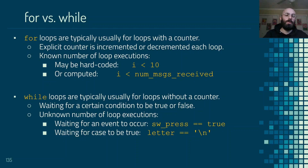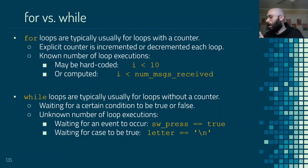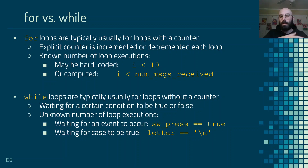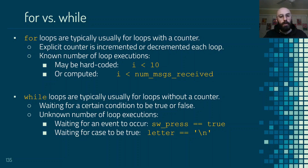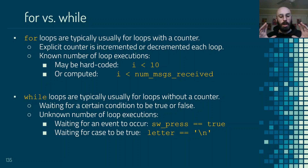For loops should typically be used when we have some known number of times that a loop should execute. We typically have some explicit counter — in many examples we just called it i, or for our servo example we called it angle to represent the different angles. We typically increment or decrement it and there's some expected number of times it should execute. Sometimes it could be hard-coded, like while i is less than 10, or sometimes it could be computed, like counting the number of messages received. A for loop is often called a count-controlled loop because it executes a known number of times.